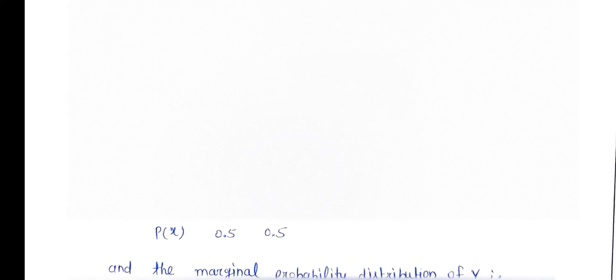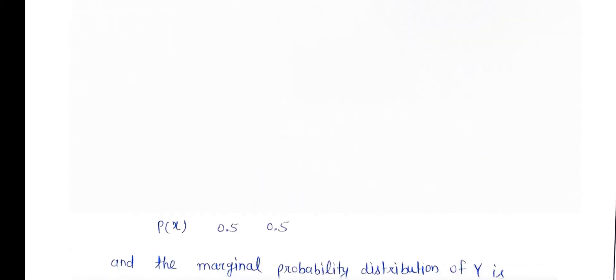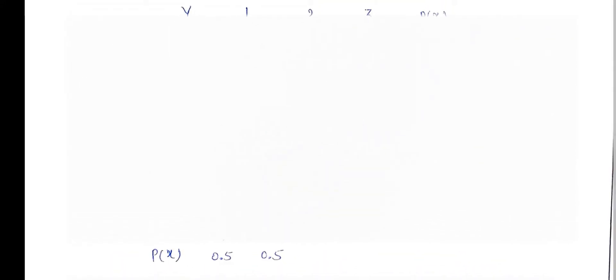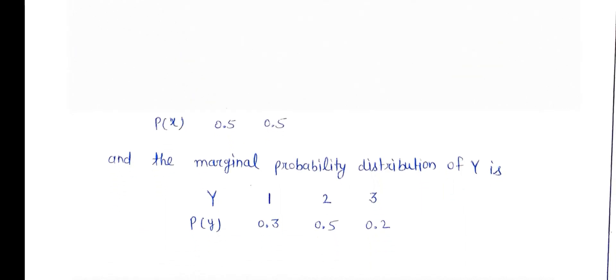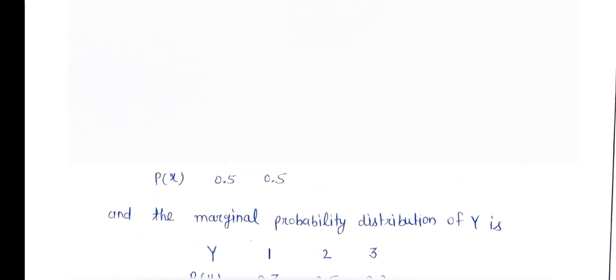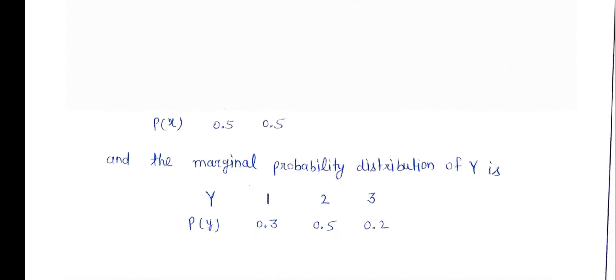Now, that's the marginal probability distribution of X, which is 0.5, 0.5 for 1 and 2. And marginal probability distribution of Y is 0.3, 0.5 and 0.2.